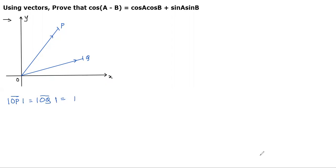Now, I am assuming the angle made by OP with positive direction of x-axis as A and angle made by OQ with positive direction of x-axis as B. If you observe this carefully, then one can easily say that the angle between the vectors OP and OQ is A minus B.